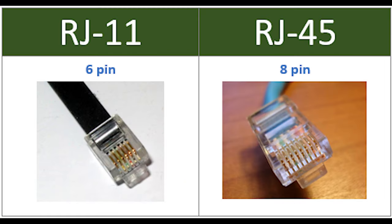Now let's get into copper cables. RJ11 connectors are small plastic connectors used on telephone cables. They have capacity for six small pins, but in most cases not all pins are used. For example, a standard telephone connection uses only two pins, and a cable used for a DSL modem connection uses four. RJ45 looks just like RJ11, but supports up to eight wires instead of the six supported by RJ11 connectors.